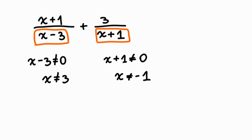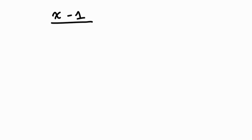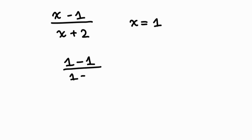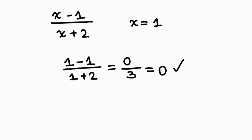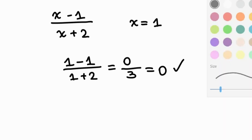Why do we not state restrictions on the numerator? Say you have x minus 1 over x plus 2, and you evaluate it for x equals 1. You get 1 minus 1 over 1 plus 2, which equals 0 divided by 3. When you get 0 in the numerator, the expression is not undefined — when you divide 0 by any number, it just becomes 0. So there is no need to set restrictions on the numerator.